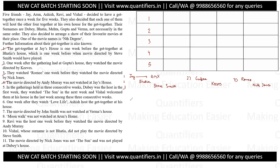In gatherings held in three consecutive weeks, Dubai was the first to host, then the movie 'Sun' was played in the next week, and Vishal hosted at the third week. So we are talking about Dubai, then Sun, then Vishal across three consecutive weeks. These three weeks span a total of three positions within five weeks, meaning there has to be some overlap in the arrangement.